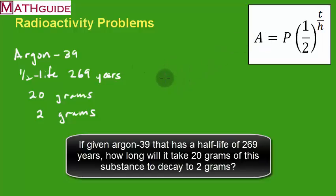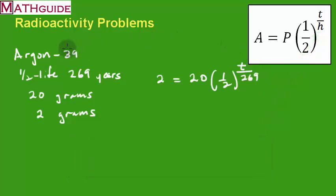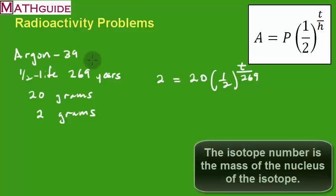Our end amount, that's A, is going to be 2 grams. Our starting amount is 20. We always have this half, and we're going to raise it to the T power because we don't know what time it is here. But we do know the half-life. The half-life is 269. If you haven't already noticed, we never use this isotope number. That has nothing to do with this formula. It's just the name of this particular radioactive isotope. It may have something to do with the number of protons or neutrons.